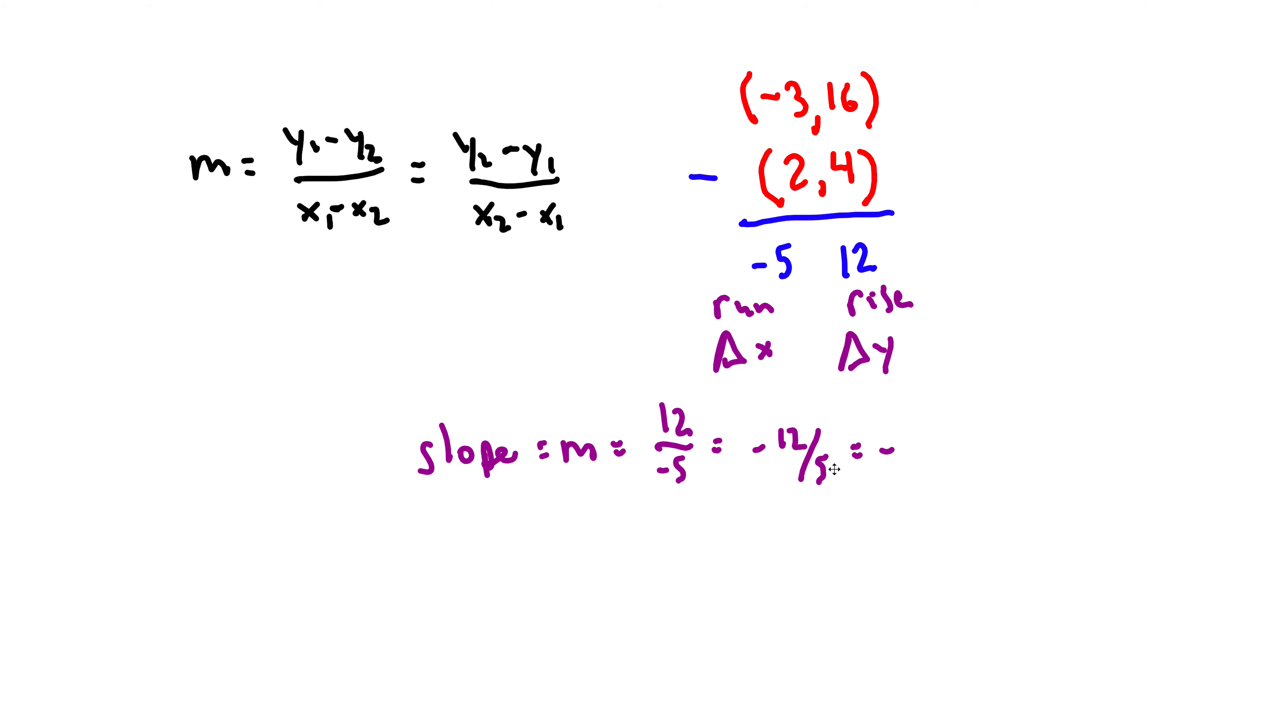If you wanted to write a decimal, 5 goes into 12 twice with a remainder of 2. So 2 and 2/5 or 2.4 is another way to write the slope. That, as they say, is that.